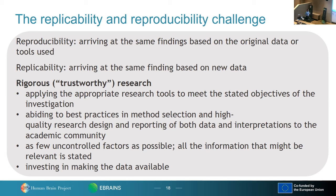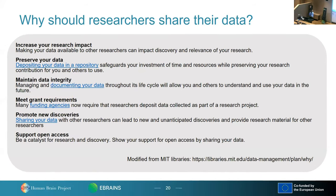This can be dealt with through what's called rigorous or trustworthy research — applying the appropriate research tools to meet stated objectives, following best practices in method selection, high quality research design, reporting on both data and interpretations to the academic community. It's the data reporting that's the critical point. As few uncontrolled factors as possible, stating information that is assumed to be of relevance, and investing in making the data available. There's a ton of literature on this — it is becoming a new industry, and for early-stage researchers considering where to go, this is a direction worth considering.